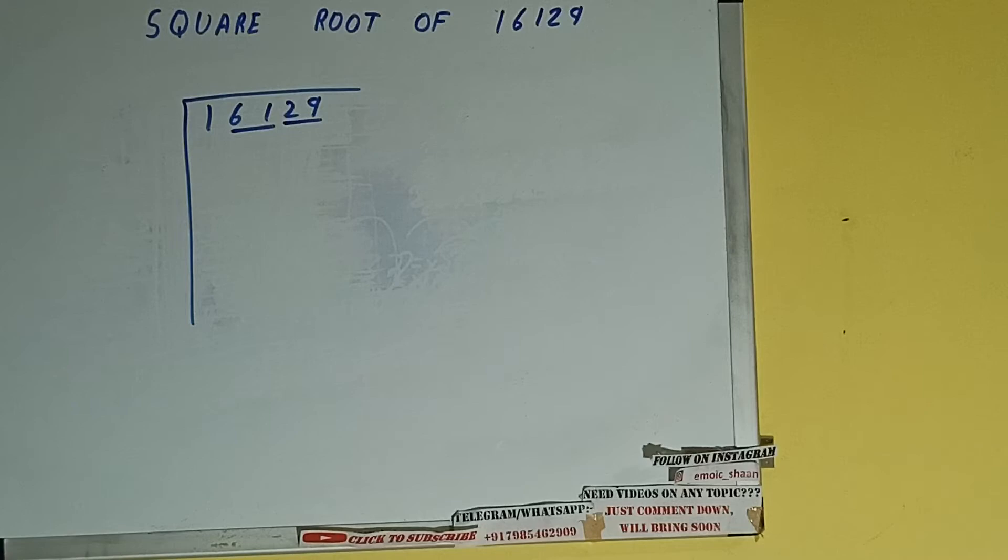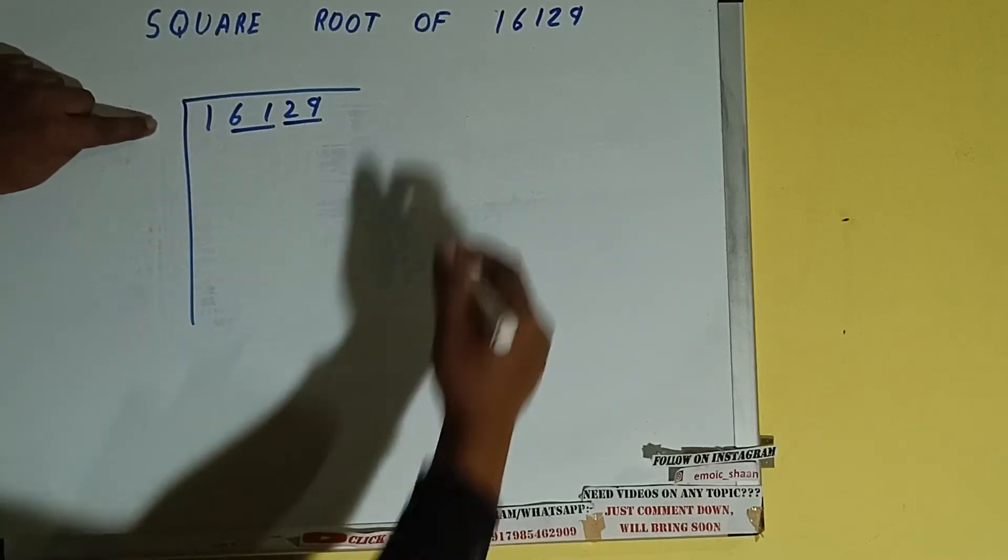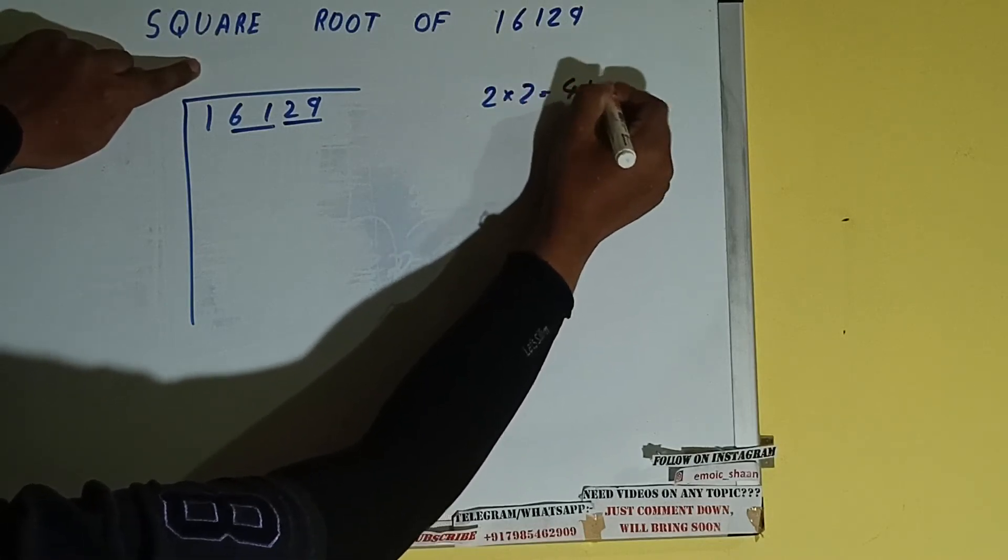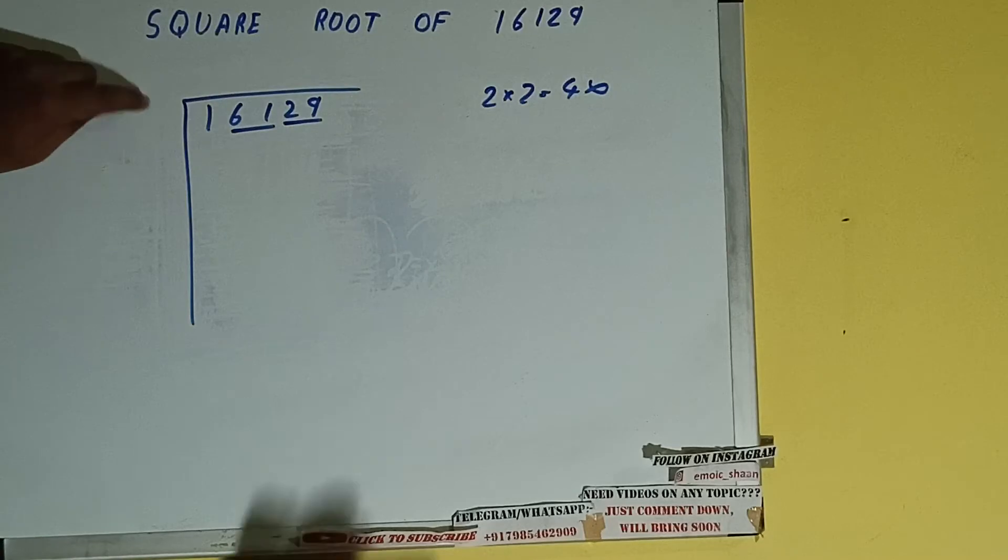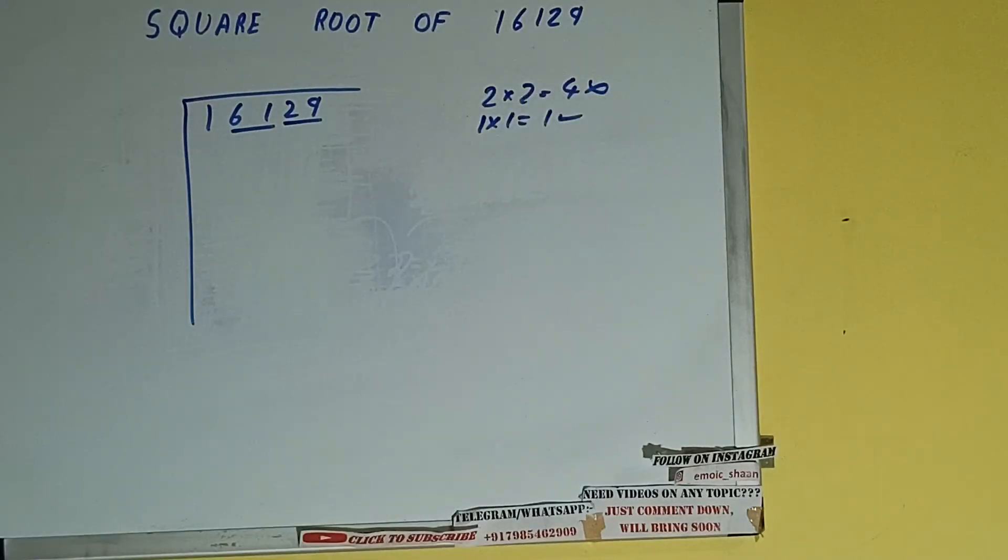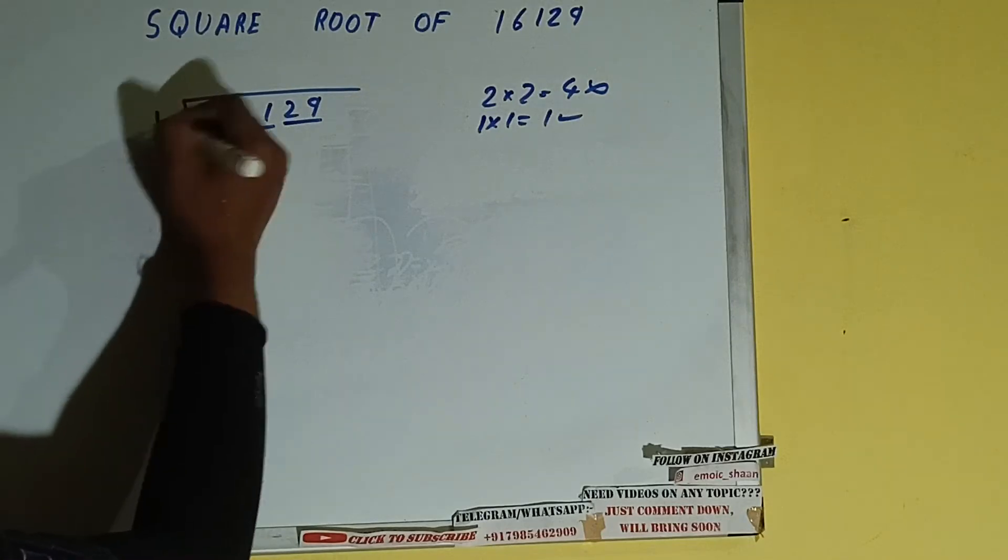The rule is whatever number we write here, we have to write here also. If we write 2 here and 2 here, it will be 4 which is greater than 1, so we cannot take it. If we write 1 here and 1 here, it will be 1 which is good to take. So 1 here and 1 here, 1 minus 1, 0 will be left.